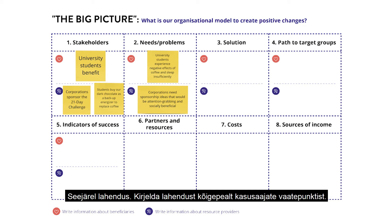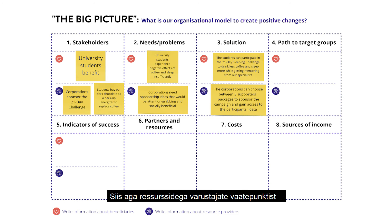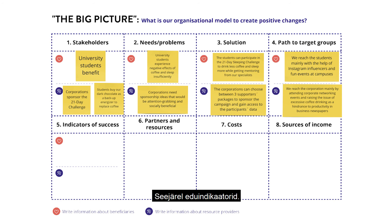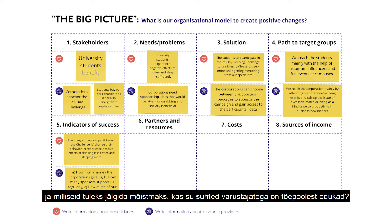Then the solution. First, describe the solution from the beneficiaries' point of view — which main elements and activities does it involve? And then the same for the resource providers: how you involve them and how you interact with them. Then the channels to target groups: which channels do you use to reach the beneficiaries and the resource providers? And then the indicators of success: which indicators do you follow to understand that your solution has the desired positive impact on the beneficiaries, and which ones to understand that your relationships with the resource providers are successful?